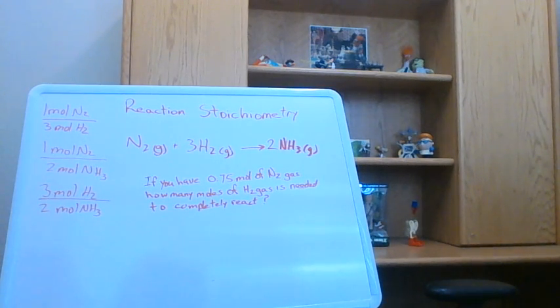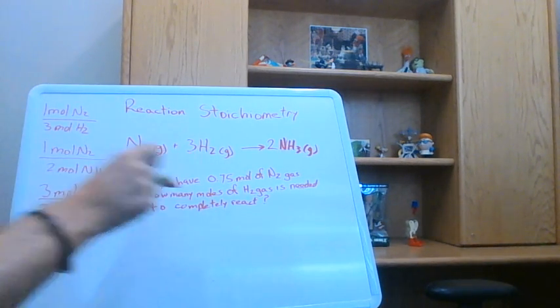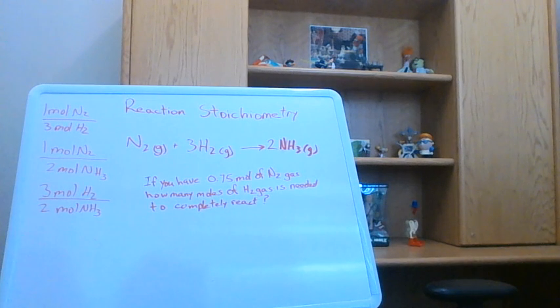So let's look at a typical stoichiometry question like this. It says, if you have 0.75 moles of N2 gas, how many moles of H2 gas is needed to completely react? And this is the kind of thing you might ask yourself if you're working in a manufacturing plant, you're trying to produce NH3, right? You don't want to mix the things in the wrong proportions because then you'd be wasting reactants and it wouldn't be very cost efficient.